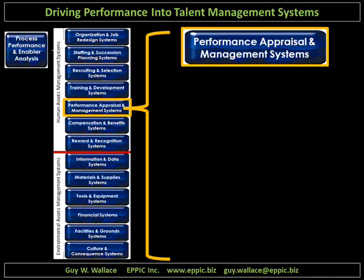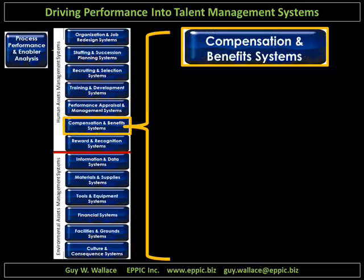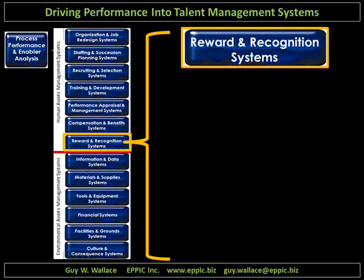Do our performance appraisal and performance management systems focus in on the needs of the process and the human performers within those processes? Or are we measuring and managing people against some other set of criteria — derived from what? Do our compensation and benefit systems adequately reward and retain the talent that we require? And do our reward and recognition systems adequately identify and reward and recognize people consistent with their needs and desires?